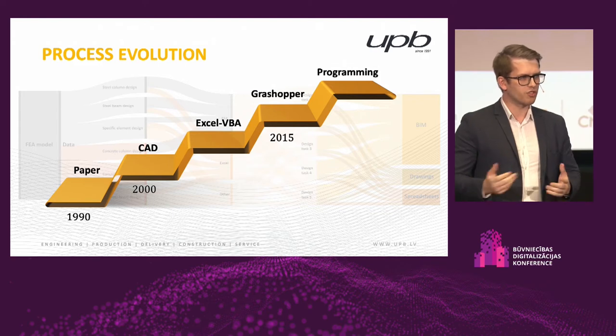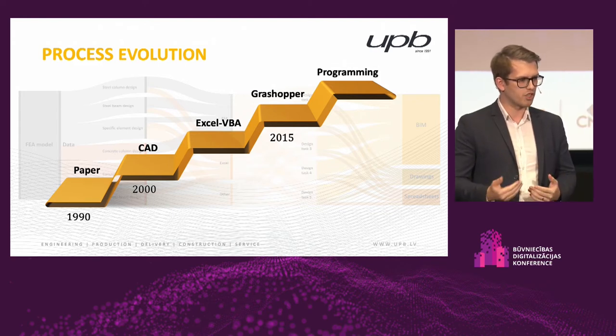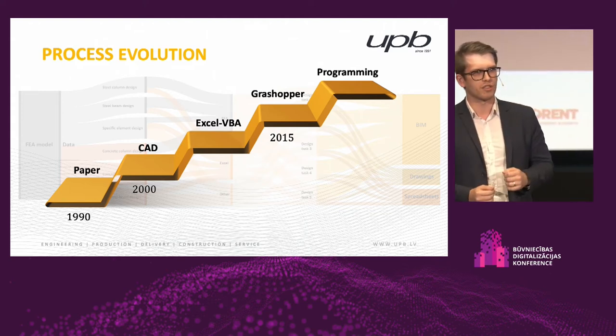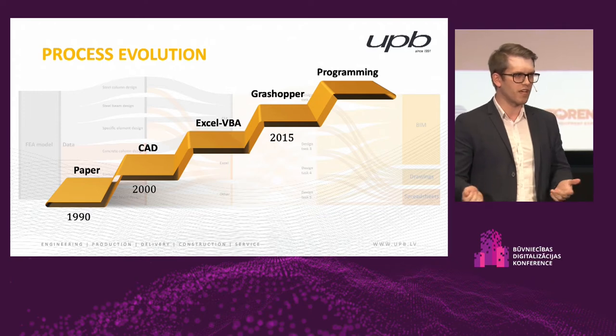Over time, the way companies manage data has changed. For example, looking at steel column cross sections from structural engineer to detailer: at the very start it was on paper, building plans with a pen. Afterwards, it was enrichment of CAD plans in DWG. Then came Excel and VBA, using default export/import functions. Then Grasshopper, which enables linking this process together. And finally, programming — where it's fully possible to automate the whole process.